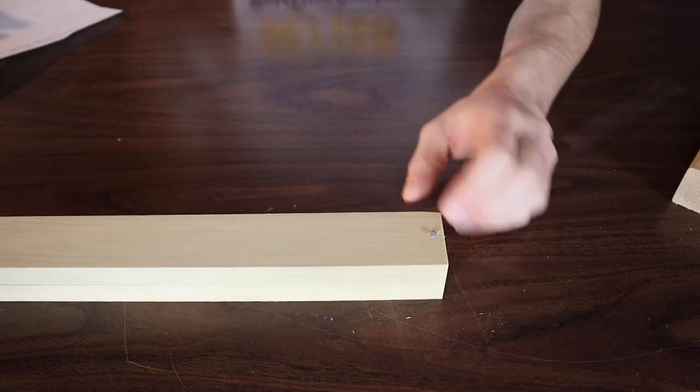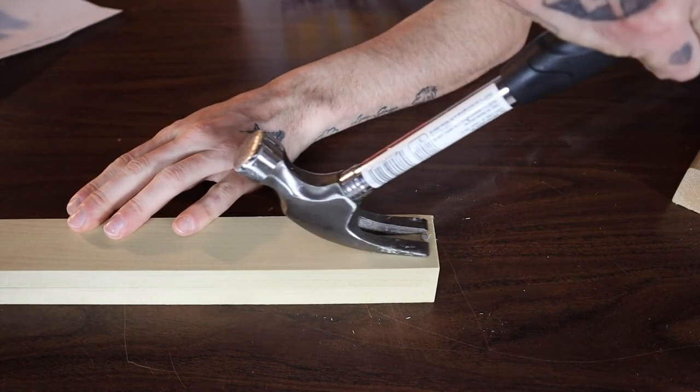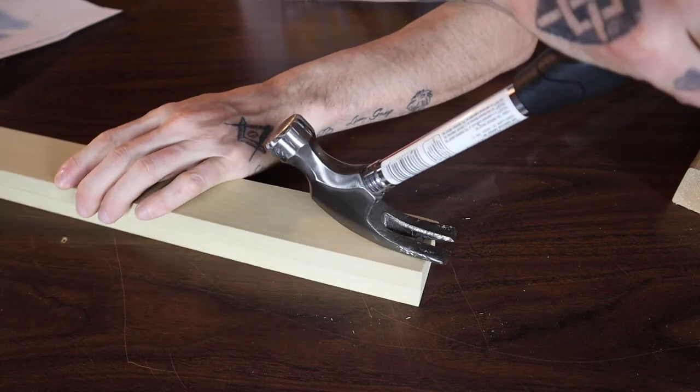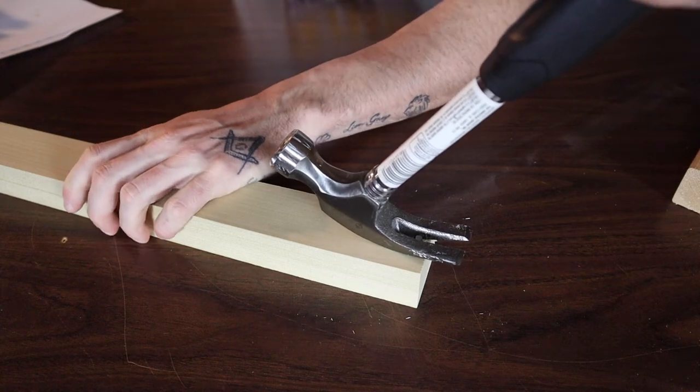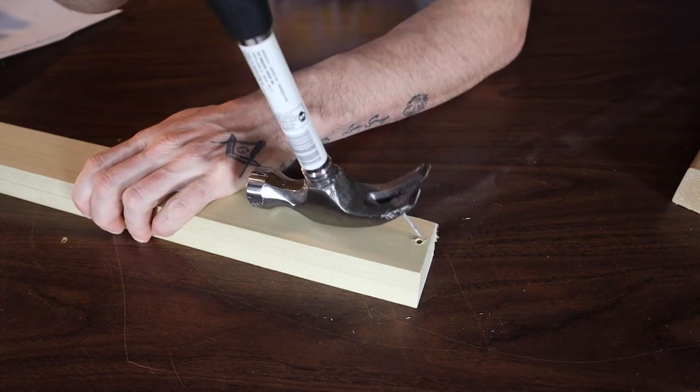If you have to remove a nail, slide the claw of the hammer under the nail. Start with little taps—that's going to get it started. Then one clean pull will pull it out.